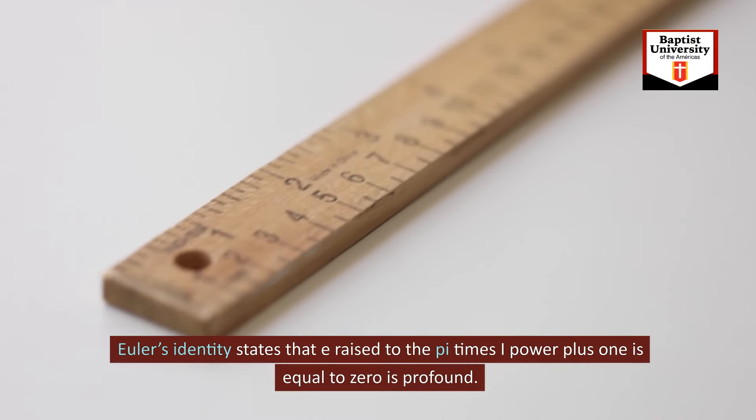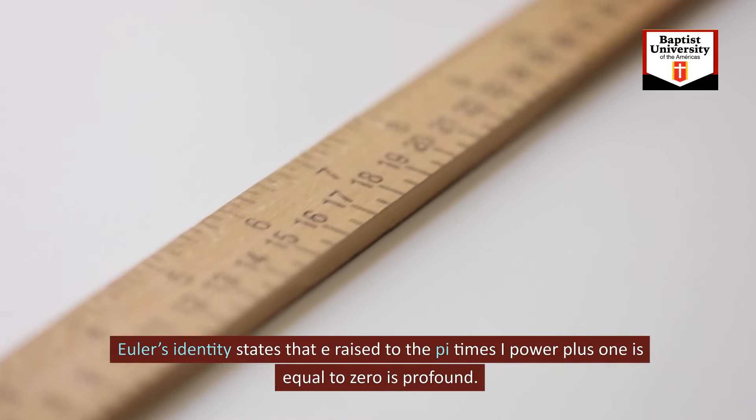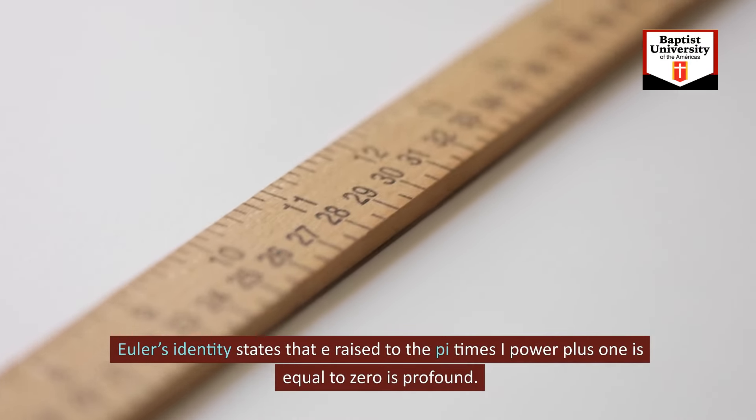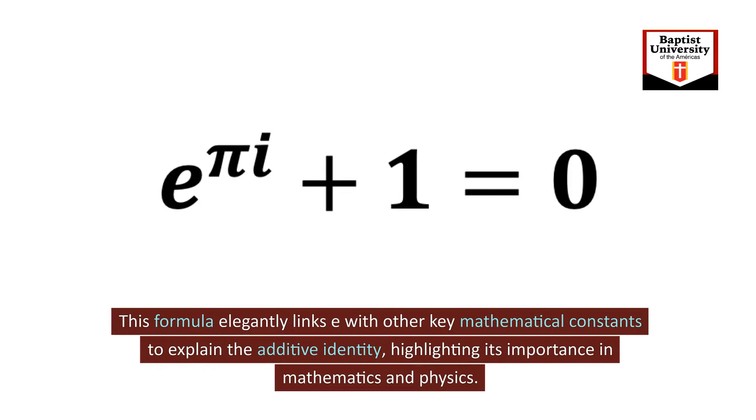Euler's identity states that E raised to the pi times i power plus 1 equals 0 is profound. This formula elegantly links E with other key mathematical constants to explain the additive identity, highlighting its importance in mathematics and physics.